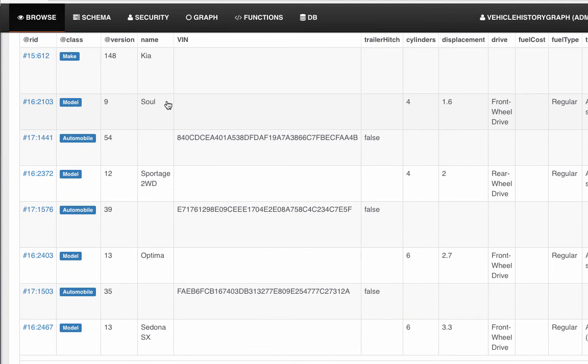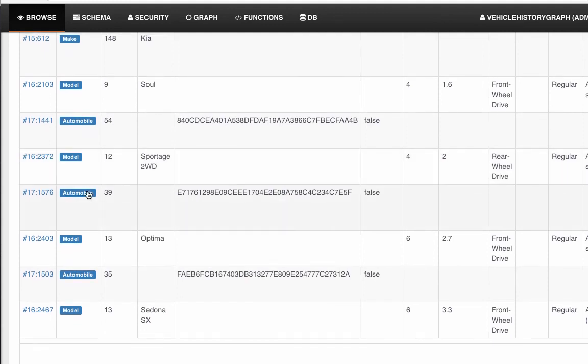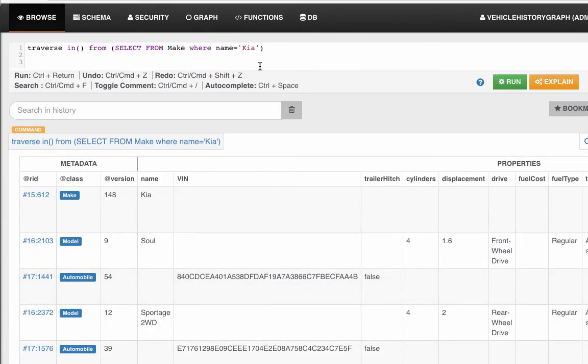we see the model Sportage two-wheel drive, we see an automobile, we see the model Optima, we see an automobile, and we see a model Sedona SX.